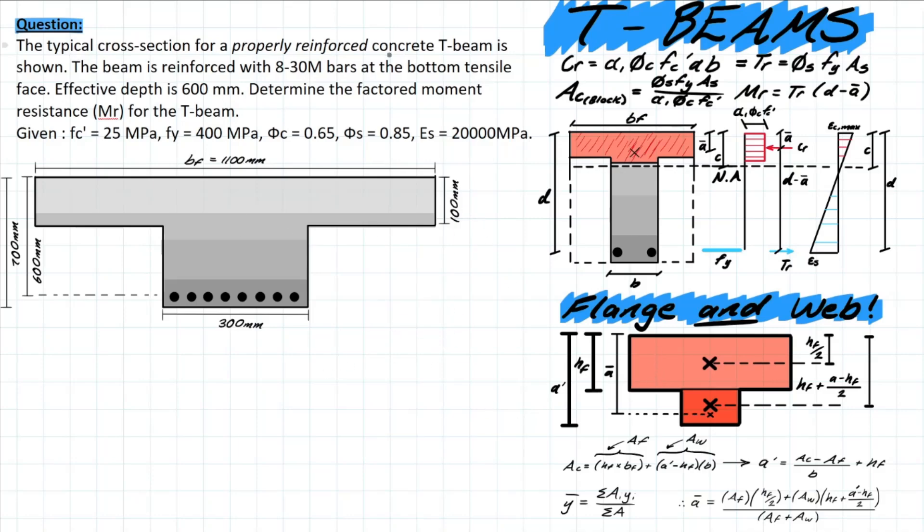We have a typical cross section properly reinforced, it's a t-beam with eight 30M bars in the bottom tensile face and an effective depth of 600 mm. It wants us to determine the factored moment resistance, and it gives us all of our design variables.